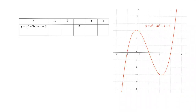We saw in the previous video how a table, an equation, and a graph can all be connected and give us the same information. We're going to concentrate in this section on reading from the graph back into the table or back into information about the equation. On this screen we have the graph of the function y = x³ - 3x² - x + 3, which has been drawn for us already, and what we want to do is work our way back and fill in the table.